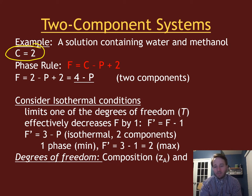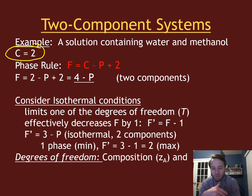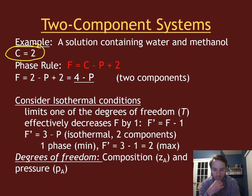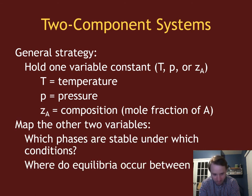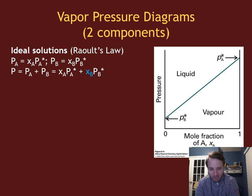For single-component systems the only degrees of freedom are temperature and pressure. For multiple components, one of those degrees of freedom is chemical composition — you can have a different mixture of compound A and B, which can represent a different phase. In general, to study multi-component systems we try limiting one or more variables like temperature, pressure, or composition, and make a two-dimensional phase diagram. We can then ask when and where equilibrium occurs, given that one variable is held constant. Here we'll hold temperature constant and look at pressure versus chemical composition.